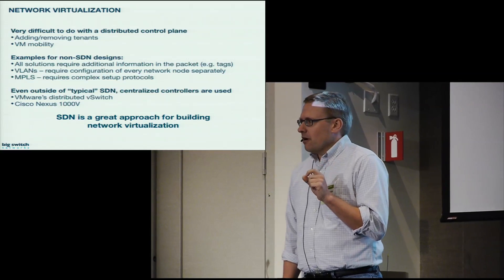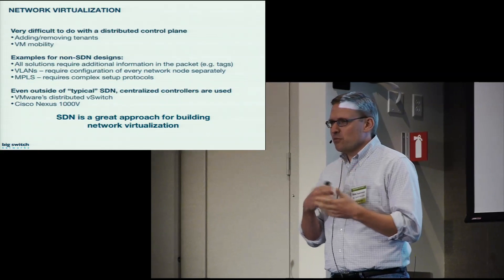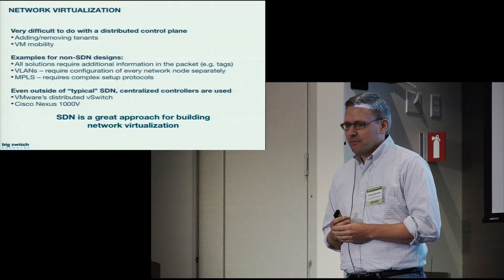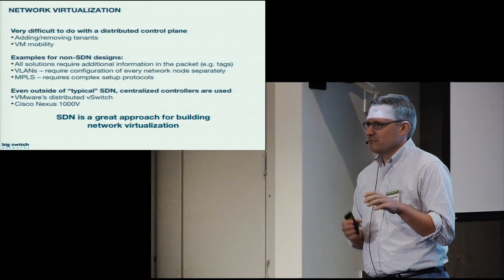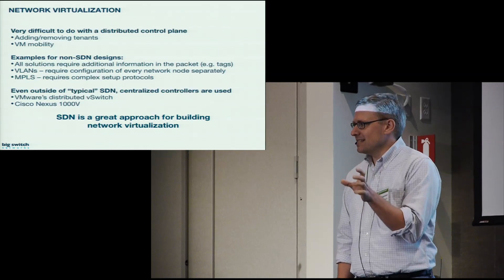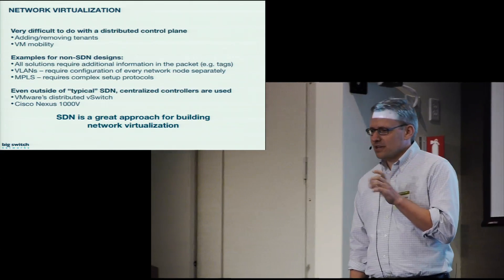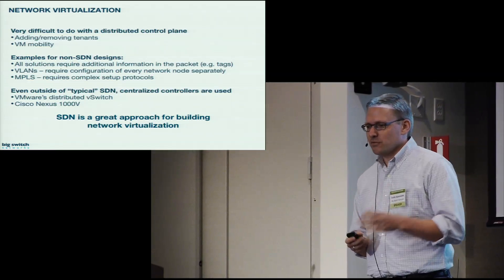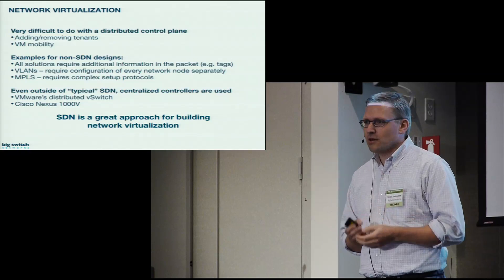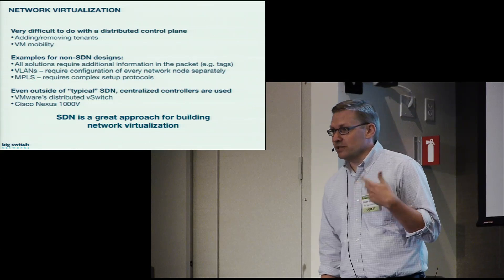Doing network virtualization is very hard if you try it in a fully distributed way, with separate switches where every switch runs its own software. Just think about if I remove or add a tenant, does it have to update every switch? If VMs move around, how would I notice, how do I reconfigure them? If you look at the classic non-SDN virtualization mechanisms that we have, they pretty much always require additional information to be tagged onto the packet, like a VLAN tag to separate traffic in MPLS. Even outside of typical SDN, there are actually some centralized controllers creeping in to the way we run networks. For example, VMware's distributed vSwitch effectively has a centralized controller, and same with the Nexus 1000B. What we've learned is that SDN is a fantastic approach for building network virtualization.